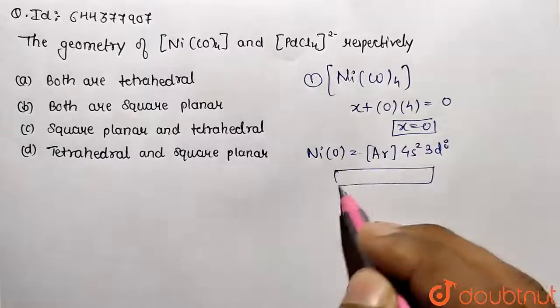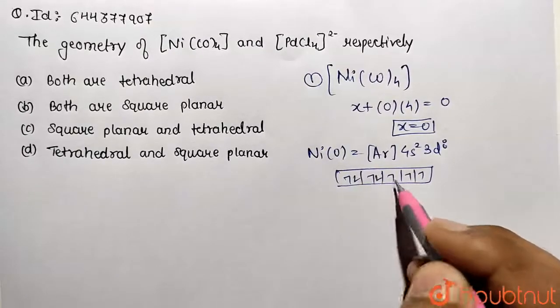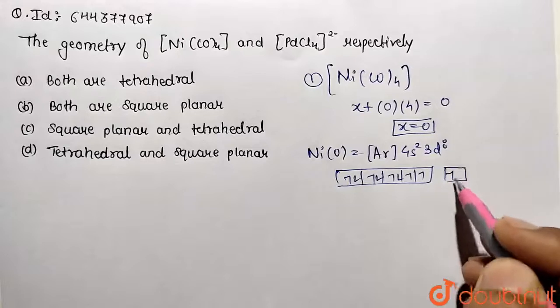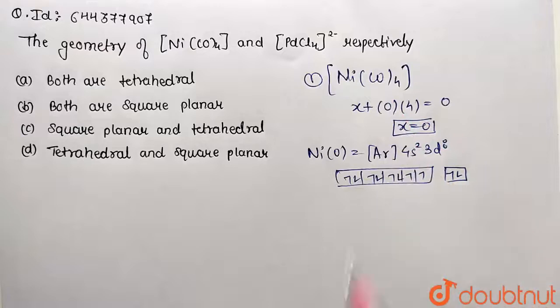If we represent this configuration with eight electrons in 3d and two in 4s, now due to the strong field ligand present, what's going to happen?